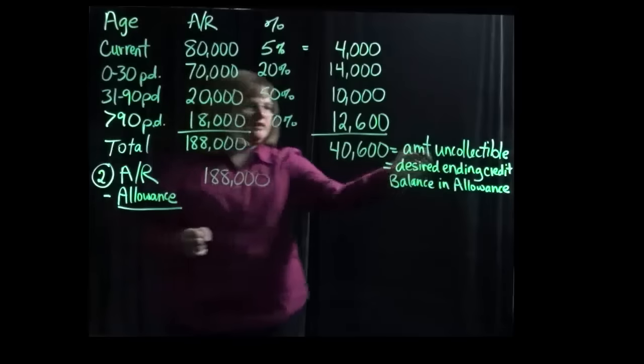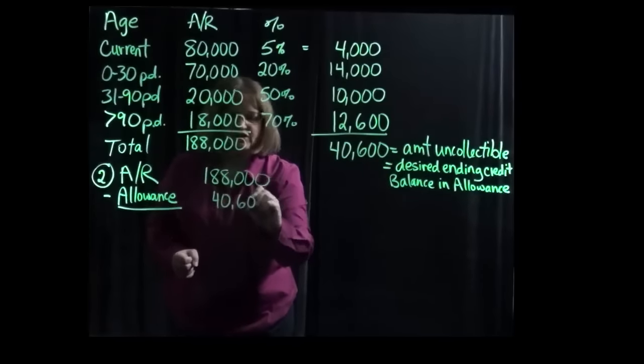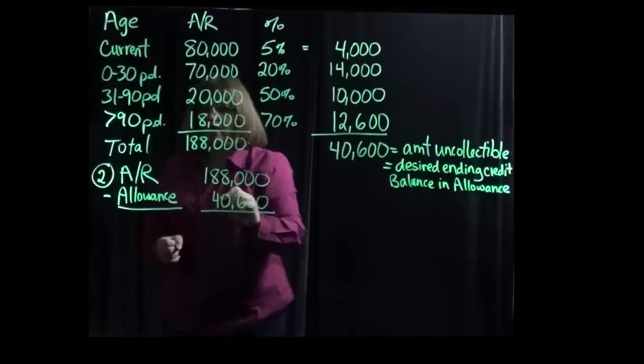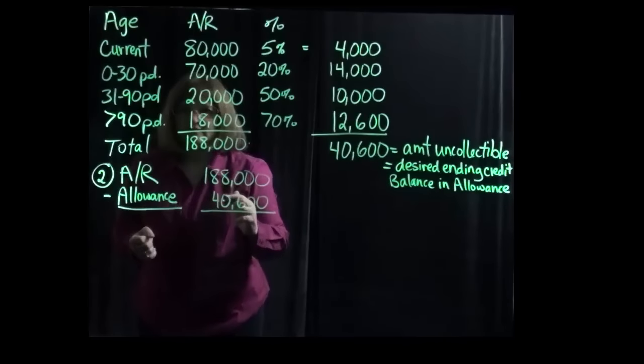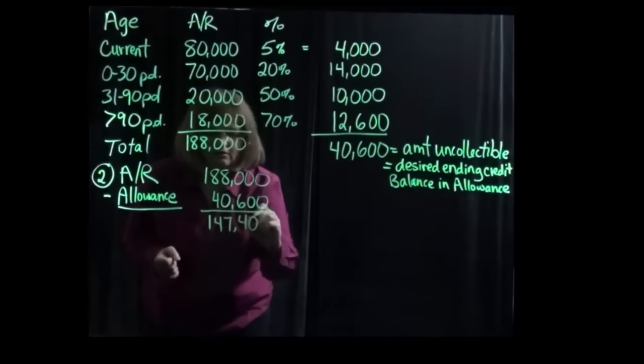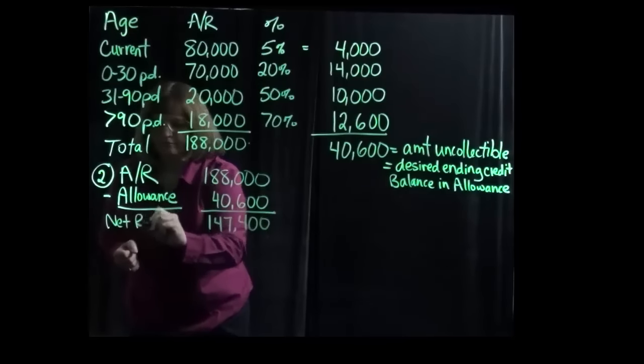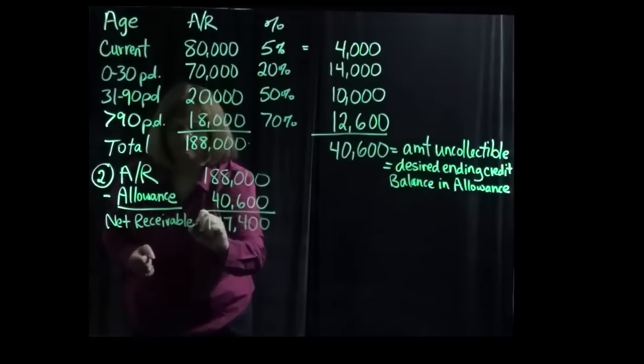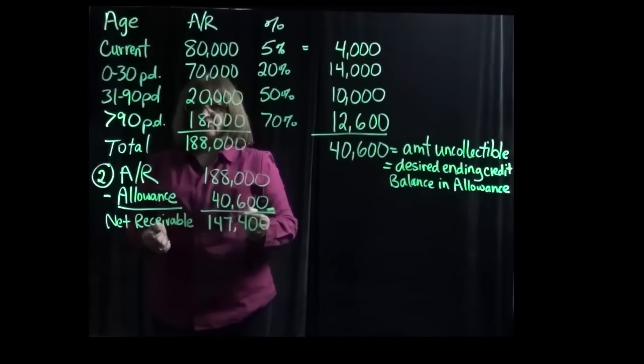And we want it to then show $40,600 as being uncollectible, so that we will show a net realizable value or a net receivable balance of $147,400. So that would be your answer to part two.